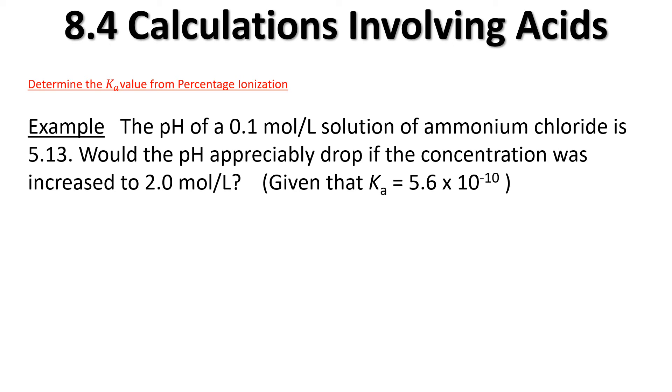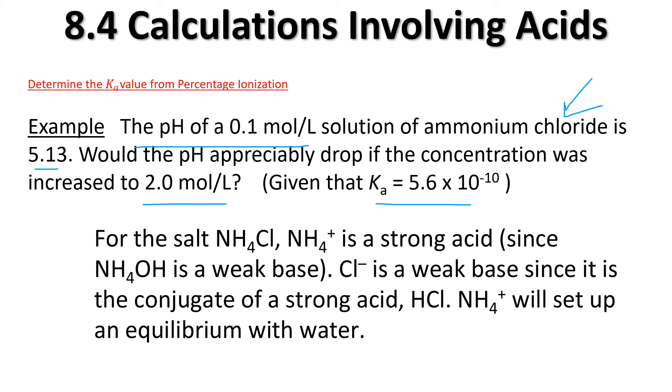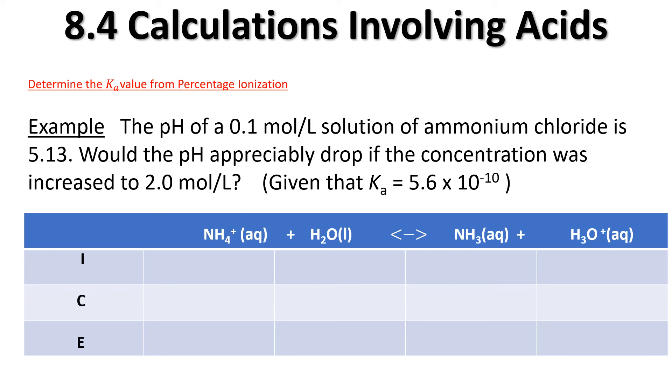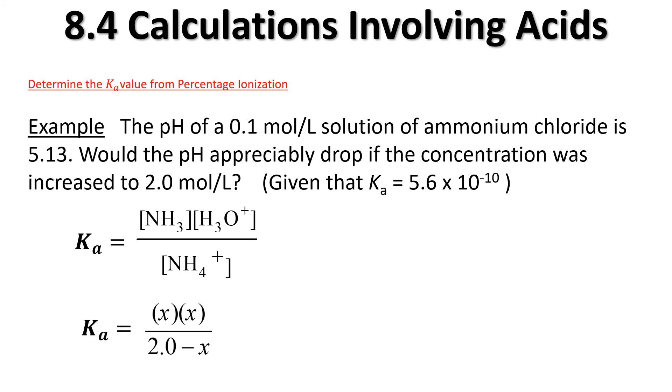In our final calculation of this video, we've got the pH of a 0.1 molar solution of ammonium chloride. Your first thought is, hang on, that's not an acid, but just bear with me here. I give you a pH of 5.13. Would the pH drop if the concentration was increased to 2.0 moles per liter? For the salt NH4Cl, NH4+ is a strong acid since NH4OH is a weak base. NH4 will set up an equilibrium with water. We'll do the ICE chart again. We've got our initial concentration of 0.1. We know that it's going to go down, and we're going to go up by x. We're going to take those values and sub them into the formula. Note that our 2.0 is actually what's going to be going in here.